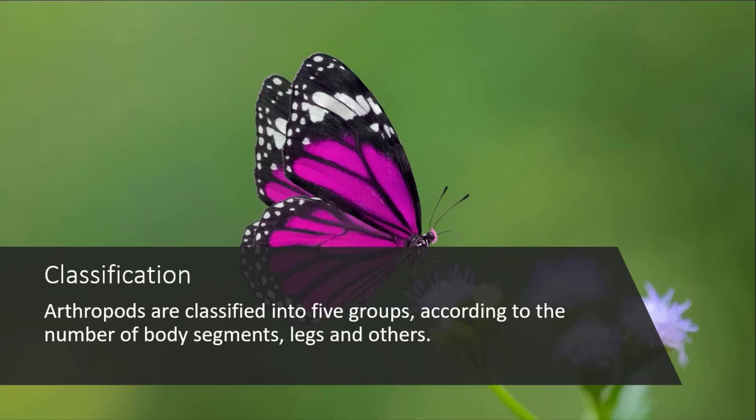Now, the classification. Phylum Arthropoda is divided into 5 different groups or classes, according to the number of body segments, legs, and other features.